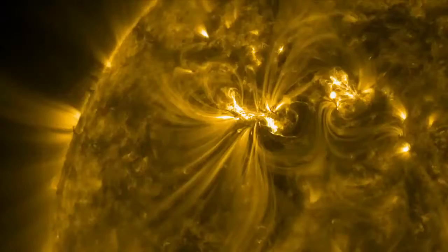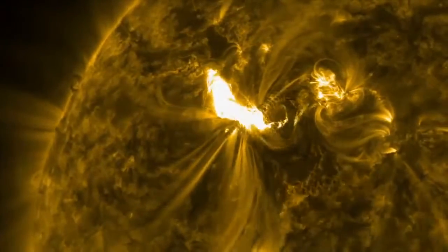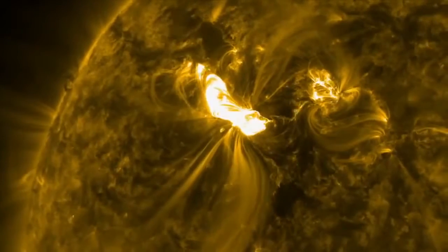A solar flare is a huge release of energy that converts the magnetic energy of the Sun into heat, into light. It accelerates particles and can really heat up the plasma in a matter of minutes to over 60 million Kelvin.